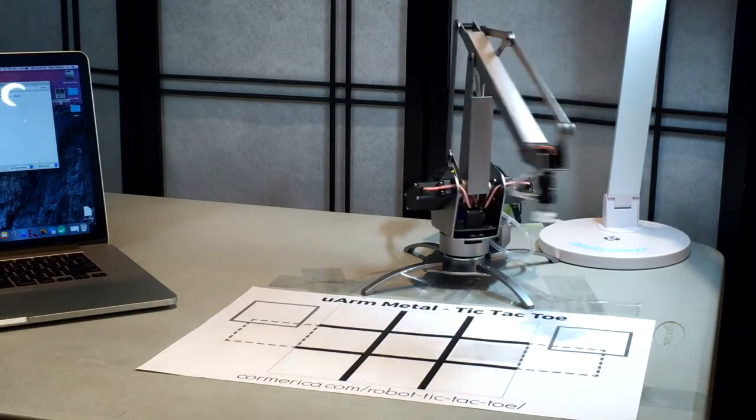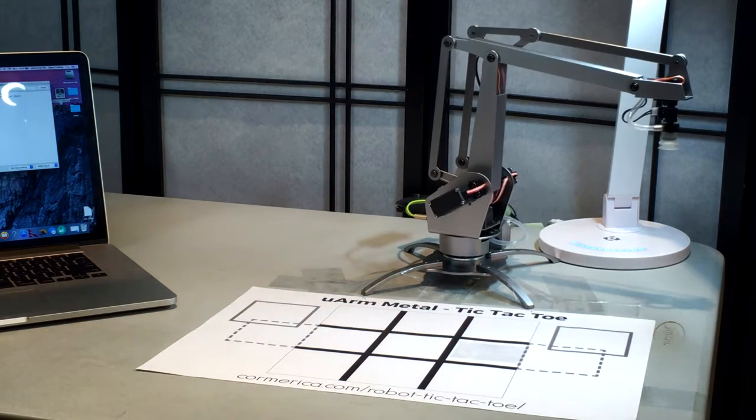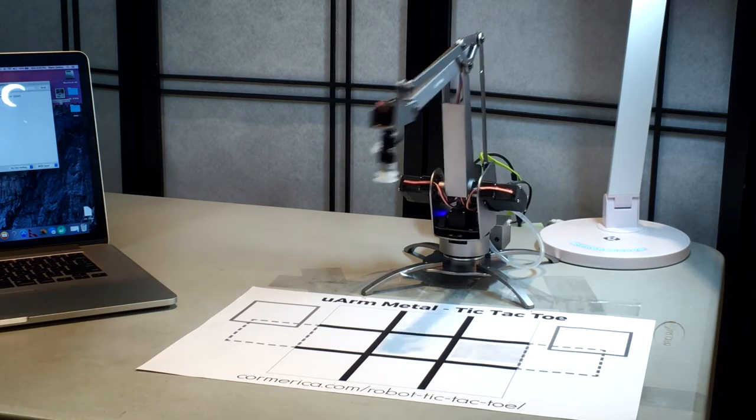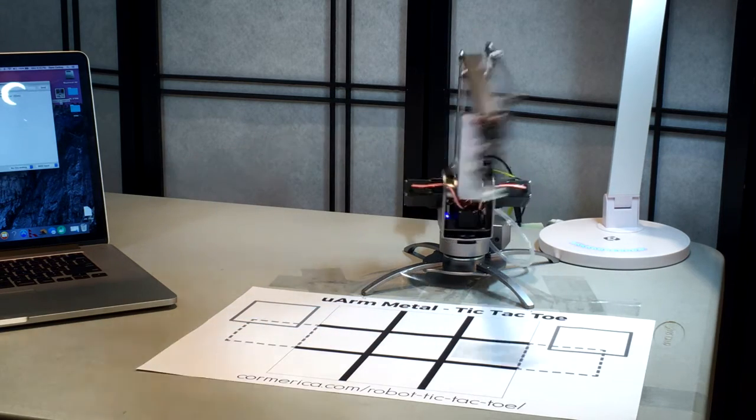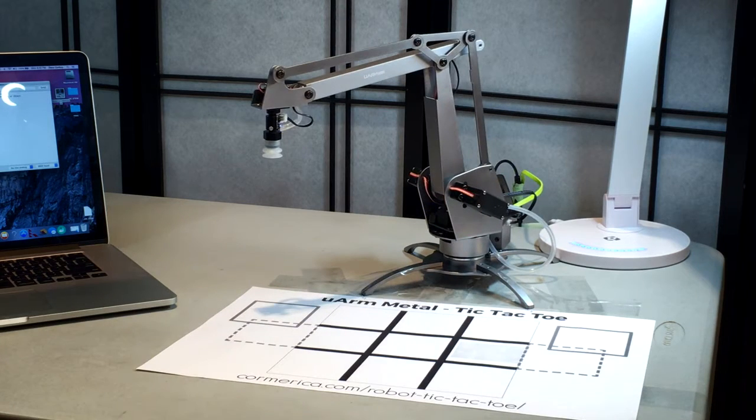As you can see, this time there actually is a robot in the video. He's the UR Metal from UFactory, a 4-axis, open-source robotic arm based on the Arduino microcontroller platform. Since he's a 4-axis robot, he can move in all three directions, and he can also rotate his hand.